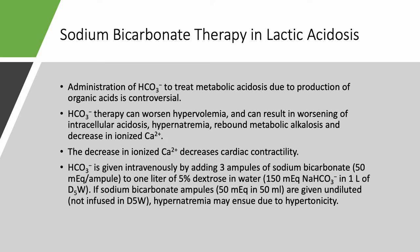People who don't want to give bicarbonate argue it causes hypervolemia, worsens intracellular acidosis because bicarb converts to carbonic acid at the cellular level, may cause hypernatremia since it's given as sodium bicarbonate, and if the patient improves you get rebound metabolic alkalosis, which decreases ionized calcium and thereby decreases cardiac contractility. To give bicarbonate, make an isotonic bicarbonate drip: add 3 amps (150 mEq) of sodium bicarbonate to a liter of D5W and run at 100–200 ml/hour. If giving undiluted ampules (50 mEq each), you can cause hypernatremia due to hypertonicity.